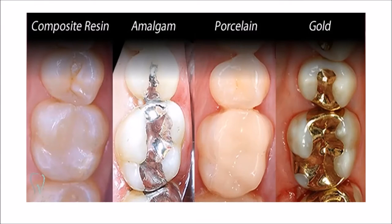Now, if you have caries, you have four treatment options: composite resin as tooth-colored or white-colored restorations, amalgam which is silver fillings, porcelain fillings, and gold fillings. Nowadays amalgam is not used much because it is a nephro and neurotoxin. Gold fillings are the most biocompatible — the most tooth-friendly. Today many patients come in specifically requesting gold fillings.